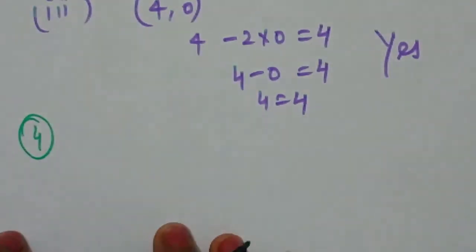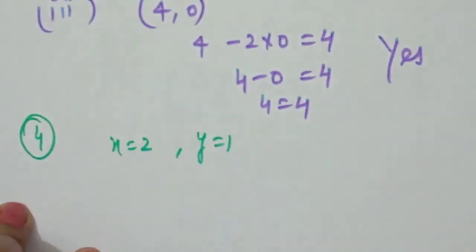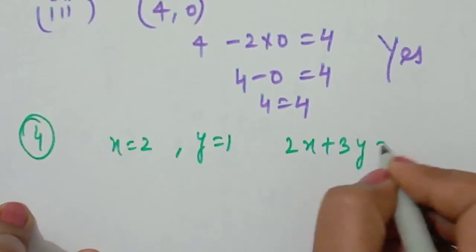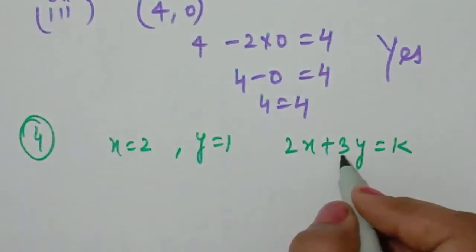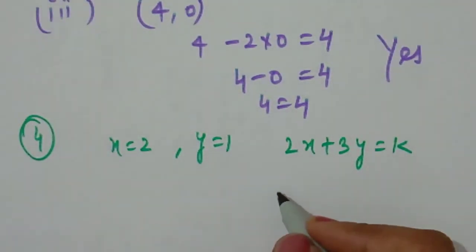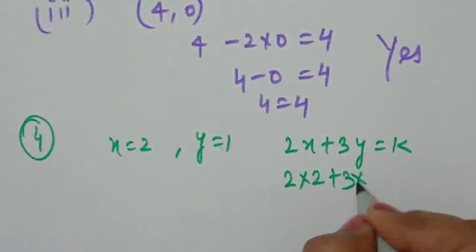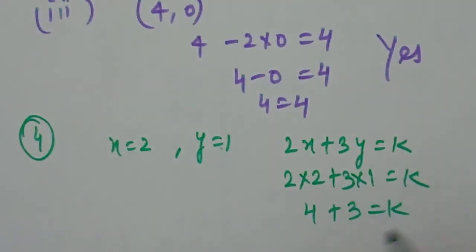Question four: find the value of k if x = 2 and y = 1 in the equation 2x + 3y = k. Substituting: 2(2) + 3(1) = 4 + 3 = 7, so k = 7. This is the last question of exercise 4.2.